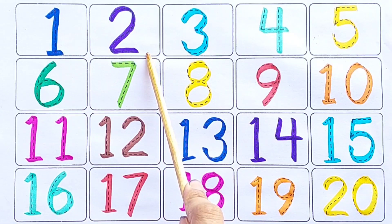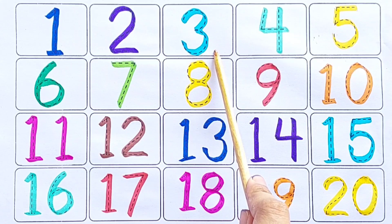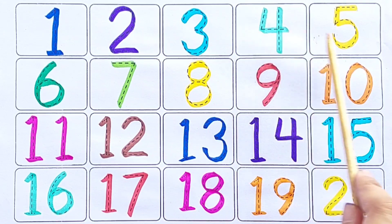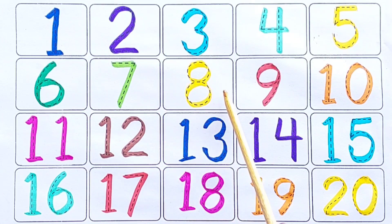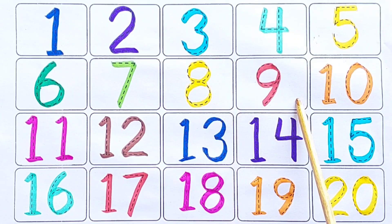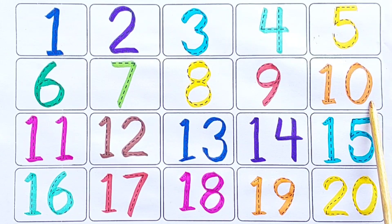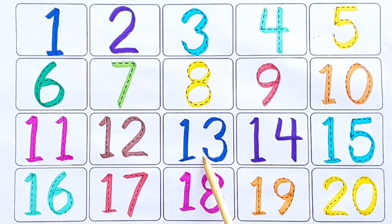One Two Three Four Five Six Seven Eight Nine Ten Eleven Twelve Thirteen Fourteen Fifteen Sixteen Seventeen Eighteen Nineteen Twenty